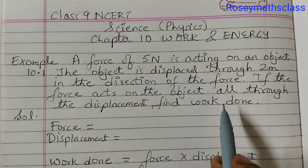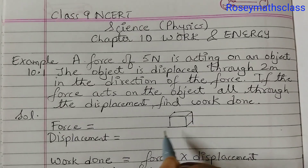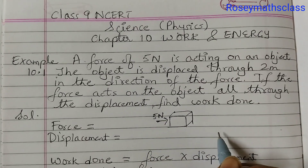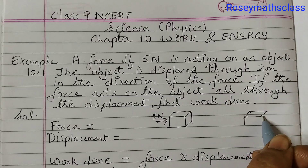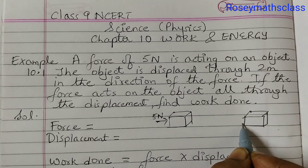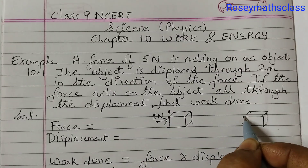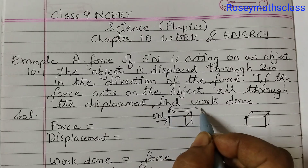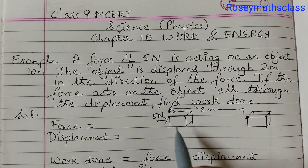We need to find the work done. What is given? There is an object here — let's draw the object — and the force is acting on it in this direction, 5 Newton. So when we are pushing it, it moves some distance, and that's the displacement. Now the displacement is not this distance from here to here — no, not that distance. From this point here, you have to take this point, okay? So this is your displacement.